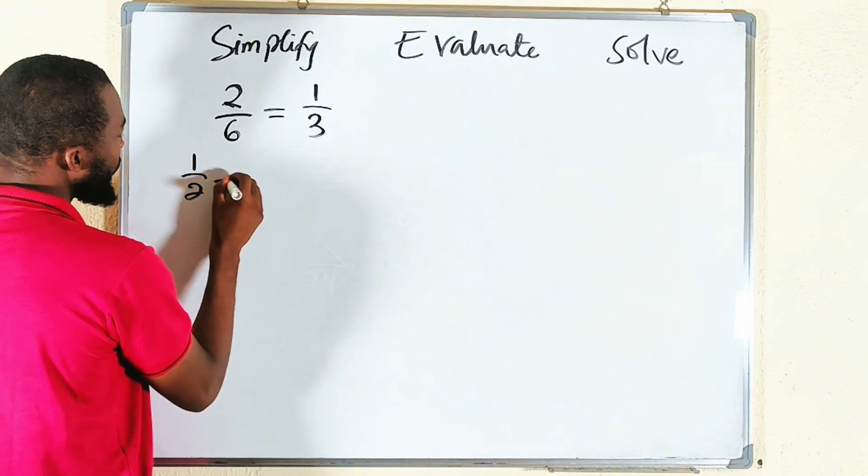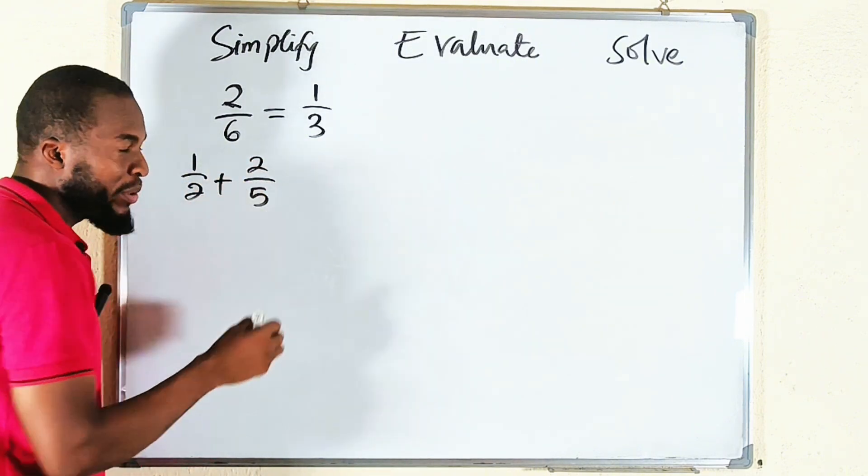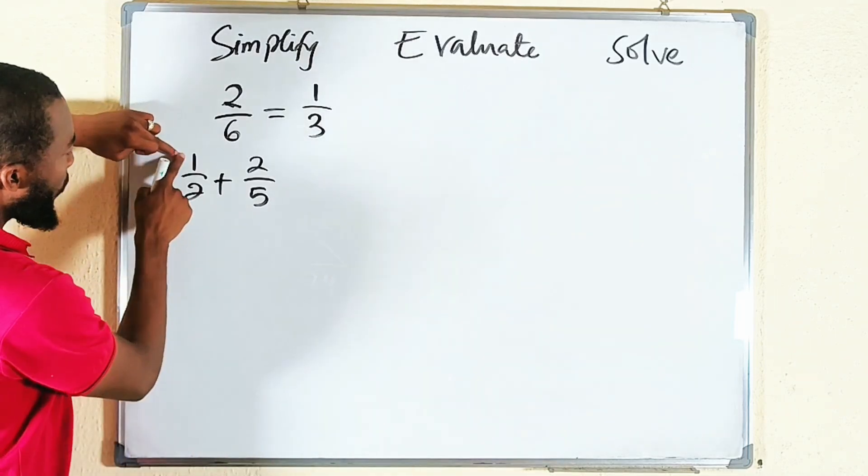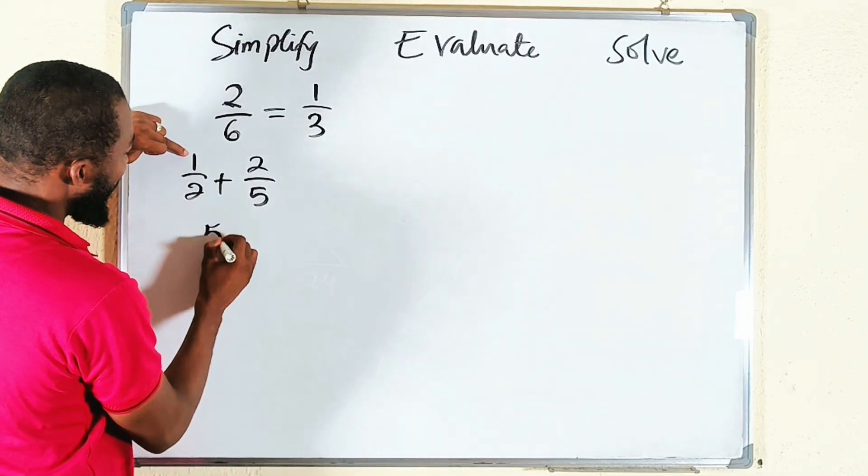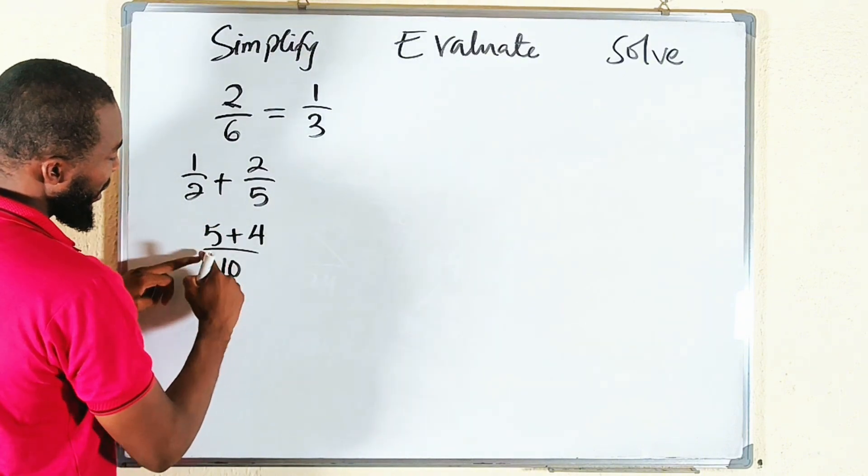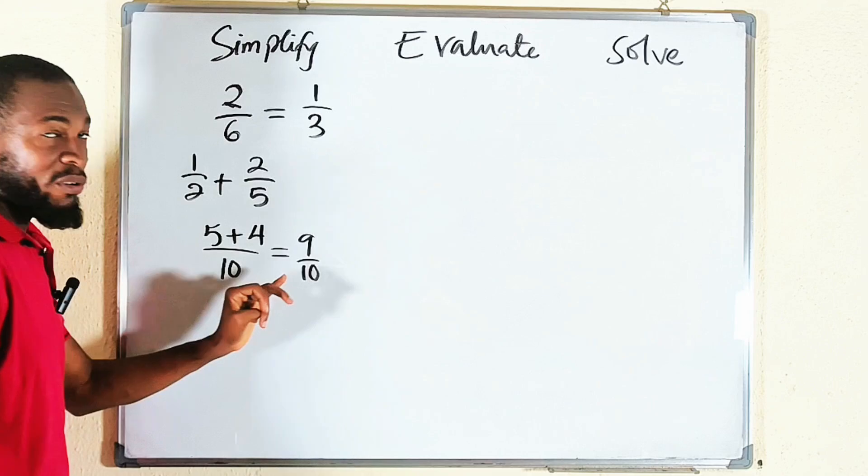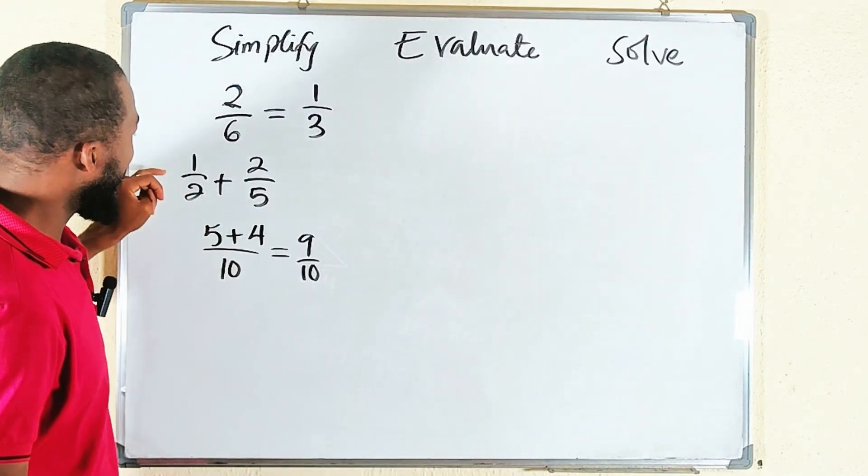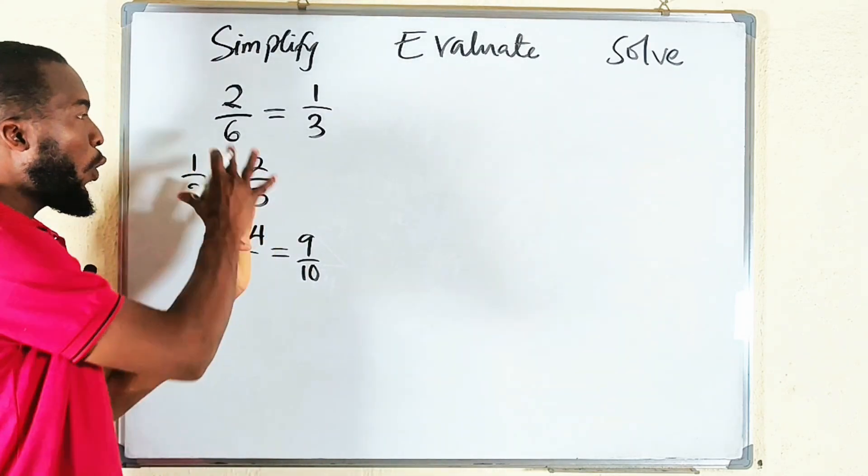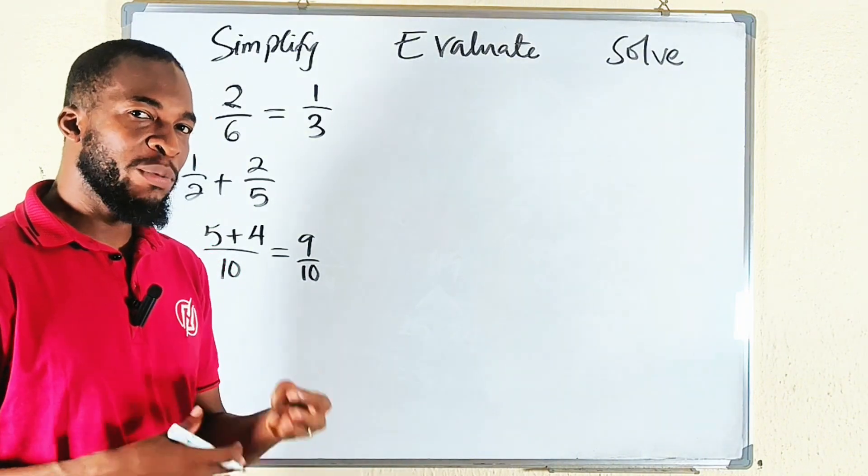For example, 1 over 2 plus 2 over 5. To simplify: 1 times 5 is 5 plus 2 times 2 is 4, divided by 2 times 5 is 10. Together you have 9 over 10, so 9 over 10 is the simplified version of this. All of these are numerical expressions.